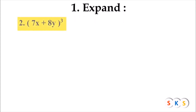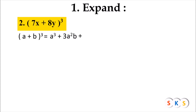Now here we have question number 2: 7x plus 8y the whole cube. It is in the form of a plus b the whole cube. So we will use this formula to expand 7x plus 8y the whole cube. We know a plus b the whole cube equals a cube plus 3a squared b plus 3ab squared plus b raised to 3.